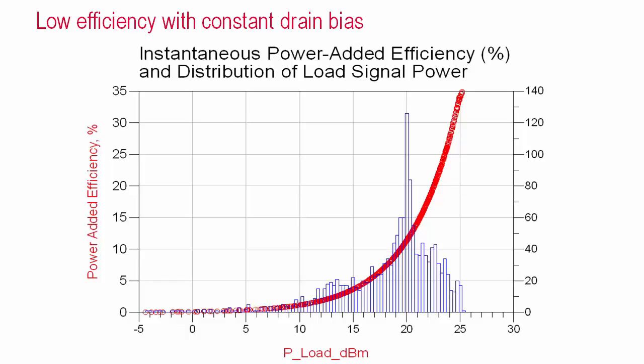This shows that with a high-peaked average input signal, much of the time, the amplifier is operating well below its optimal efficiency.